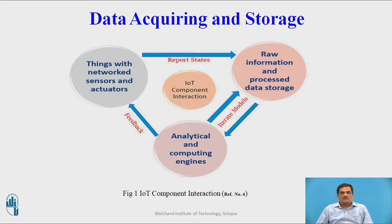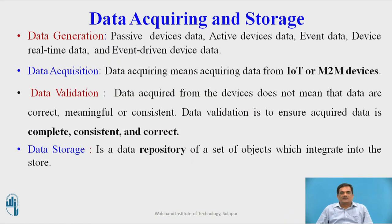IoT devices will send the data, produce a report, and send that report to the second component — the processing component. The second component will receive the raw information, process it, and store it in the storage medium. Once stored locally or in edge computing devices, the data will get analyzed to extract knowledge. This extraction of knowledge might be iterative and happen many times until analysts get the final knowledge. After analyzing the data, feedback will be sent back to the sensor devices.